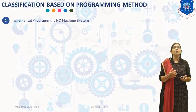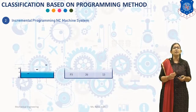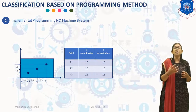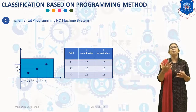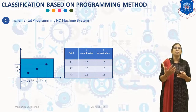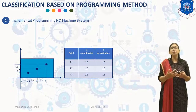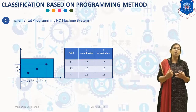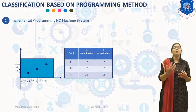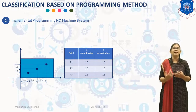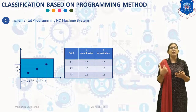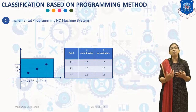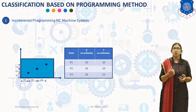In incremental programming NC machine systems, using the Cartesian coordinate system with incremental measurement, each point is specified using the path differential from the preceding point position. In such programming, the control must store and process additional path measurements. For example, consider three points P1, P2 and P3. Coordinates of P1 are (10,10), P2 is (60,10), and P3 is (26,30), as each point is specified using the path differential from the preceding point position.